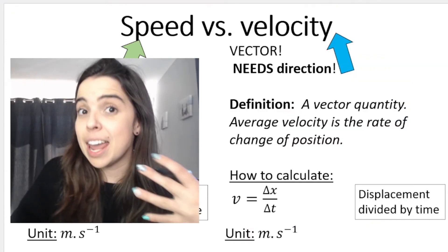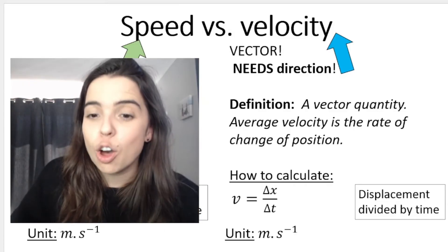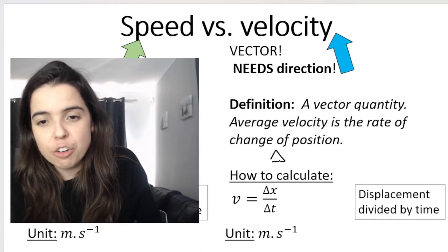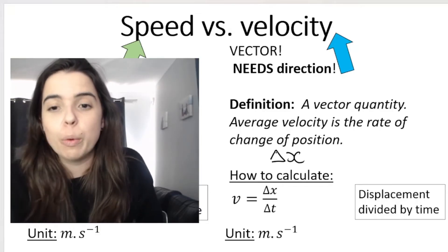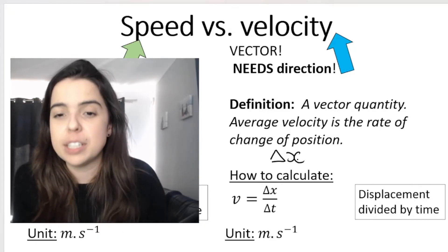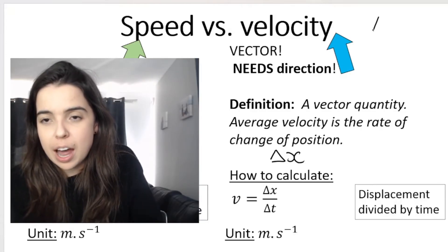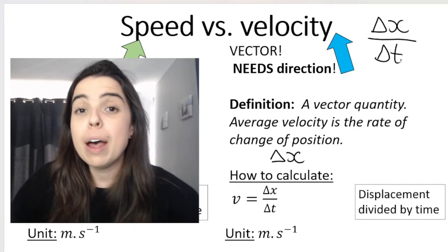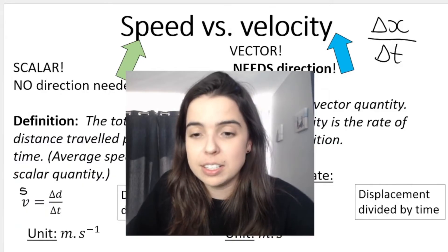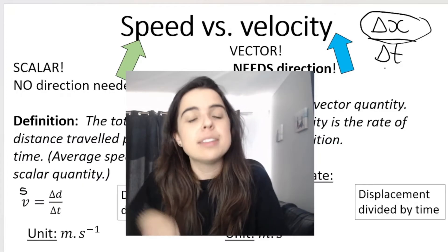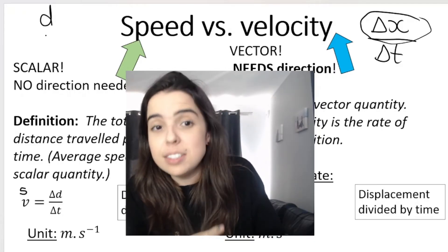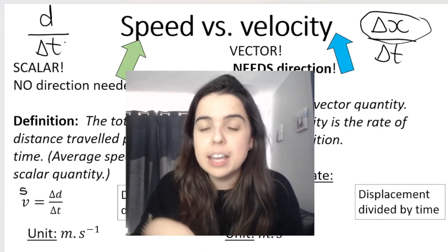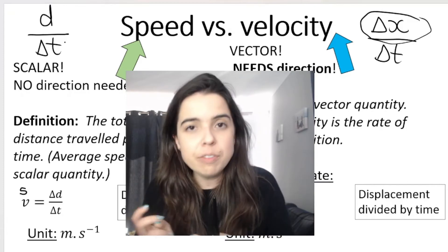Velocity, on the other hand, is a vector quantity — it needs a direction. Average velocity is the rate of change of position. Rate means divided by time, so it's the rate of change of position. Change of position can be represented by delta x, where delta means change and x means position. So the formulas are very similar, but there is a very big difference: to calculate velocity, you use displacement divided by time. Displacement is a vector quantity. For speed, you use distance divided by time. Distance and speed are both scalar quantities. Displacement and velocity are both vector quantities.